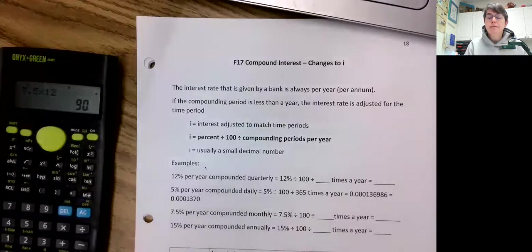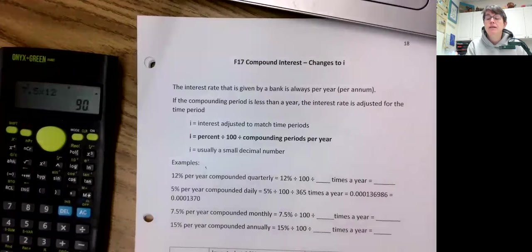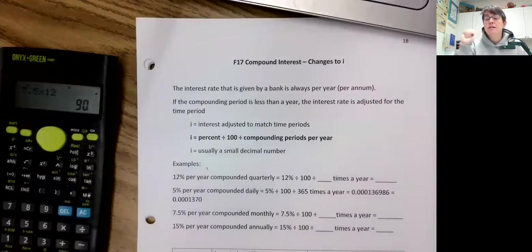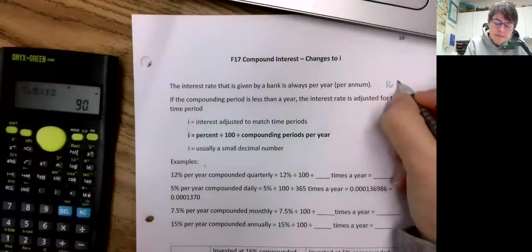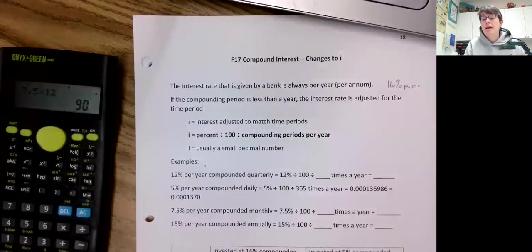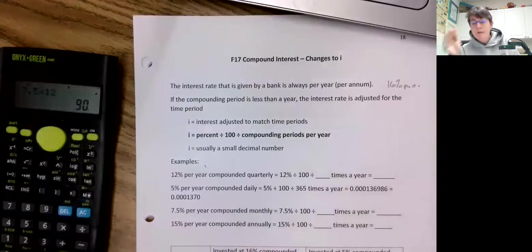The bank rate, sorry, in these questions, the way I write them up in the textbook, it's always given per year, per annum. Sometimes I've even seen it on the internet, they'll put, you know, 16% P.A. - that's per annum. All right, so for simple interest it's always per annum, always per year.